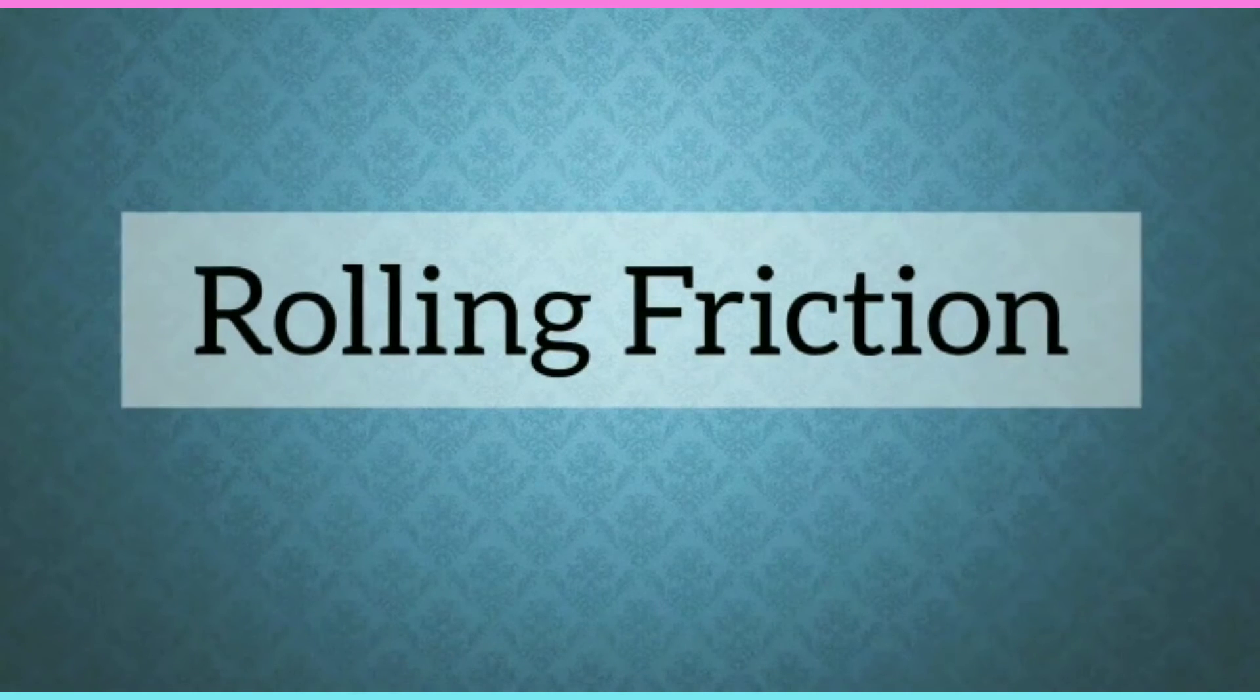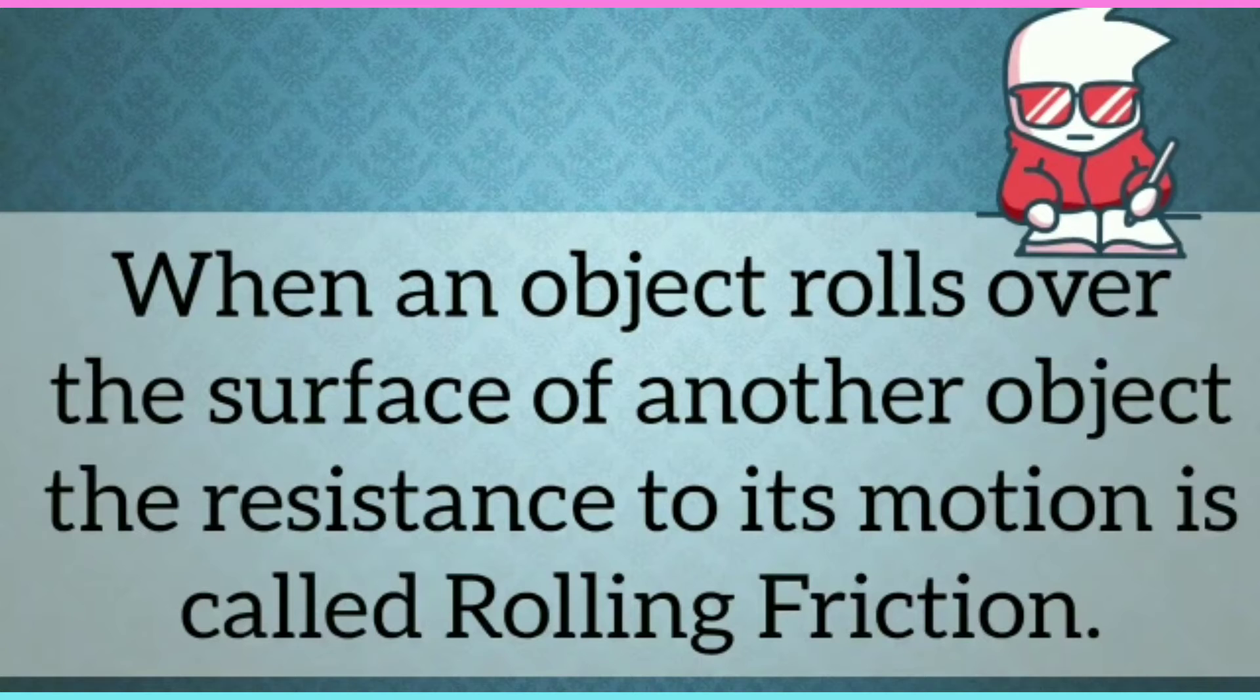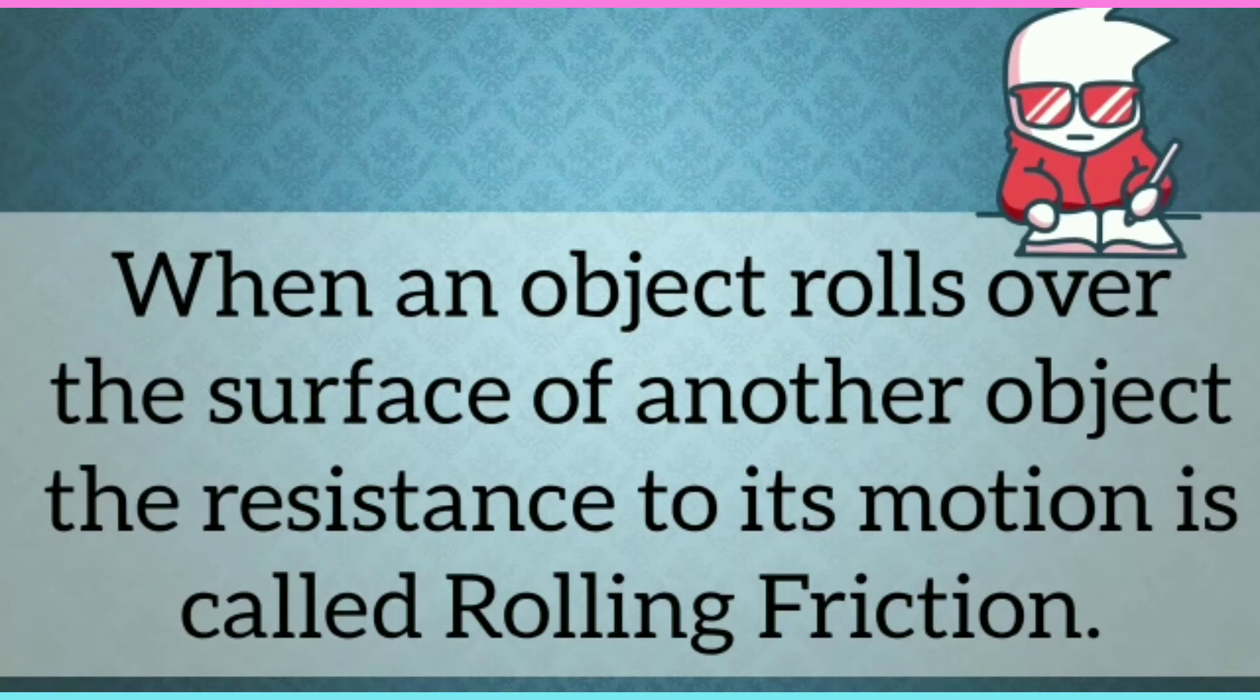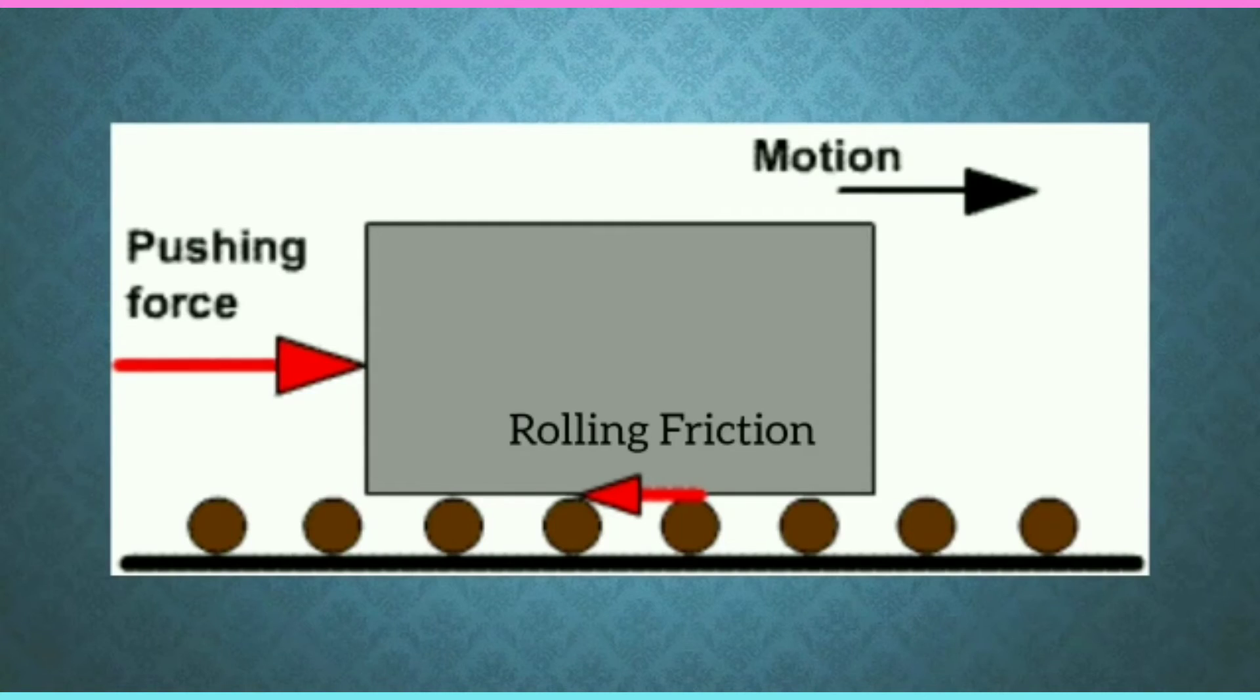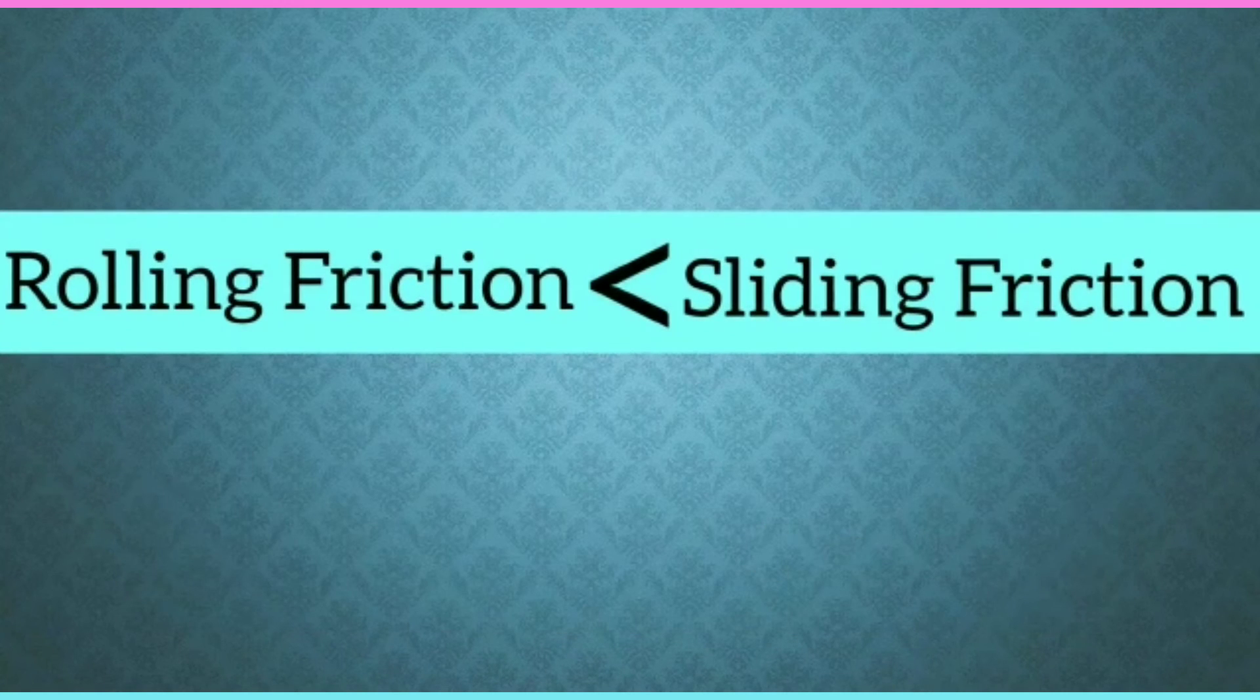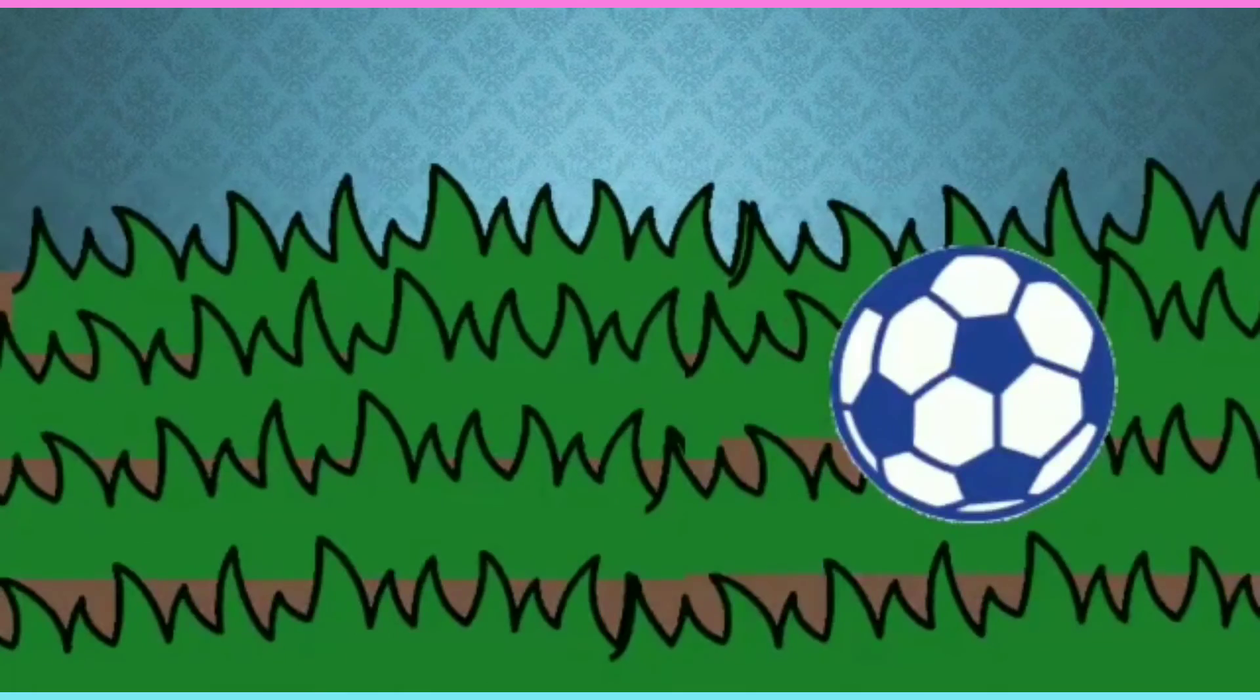Rolling friction: When an object rolls over the surface of another object, the resistance to its motion is called rolling friction. We know that it is always easier to roll than to slide an object over another object. So, rolling friction is much less than sliding friction. Thus, rolling reduces friction.